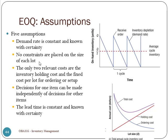Number two: no constraints are placed on the size of each lot, meaning if we calculate the EOQ has to be 100,000 units, we do it without any constraints. Of course, in real life there will be constraints on how much you can order every time, depending on the capacity of your transportation, warehouse, the money you have, and the capacity of your supplier. But now we just assume there's no such constraint on how much we need to order for every lot.